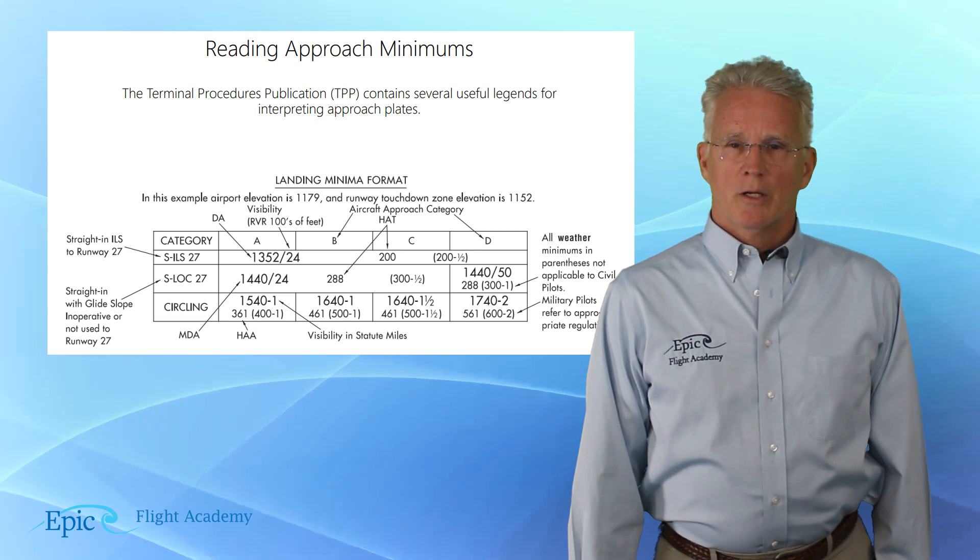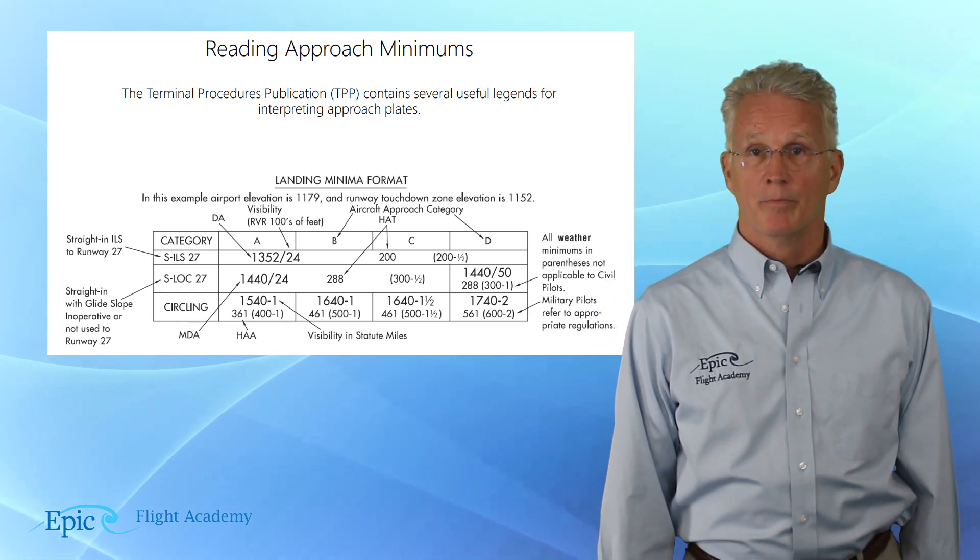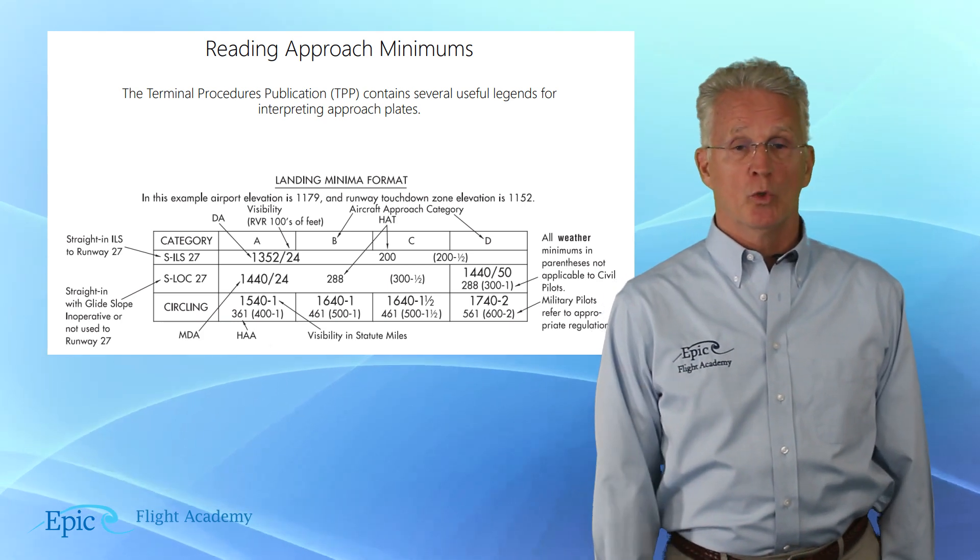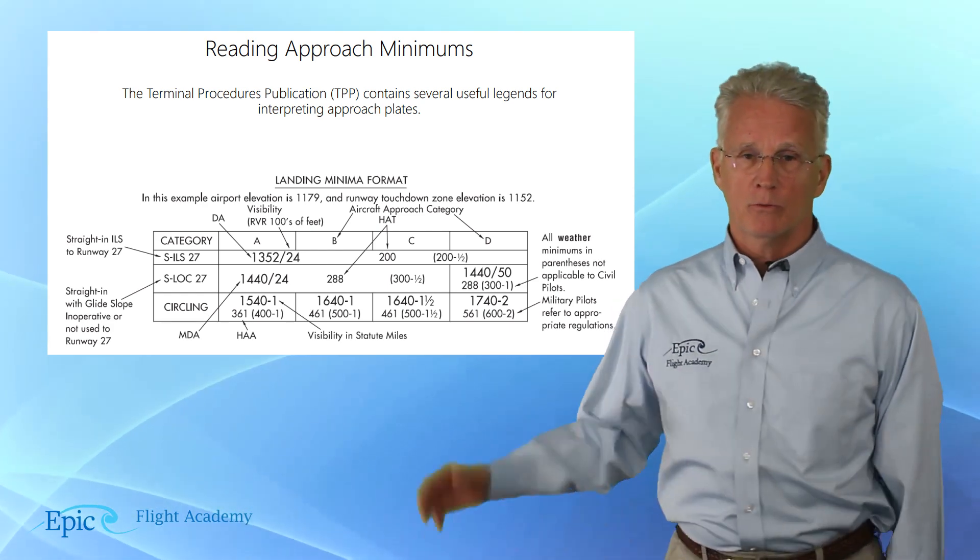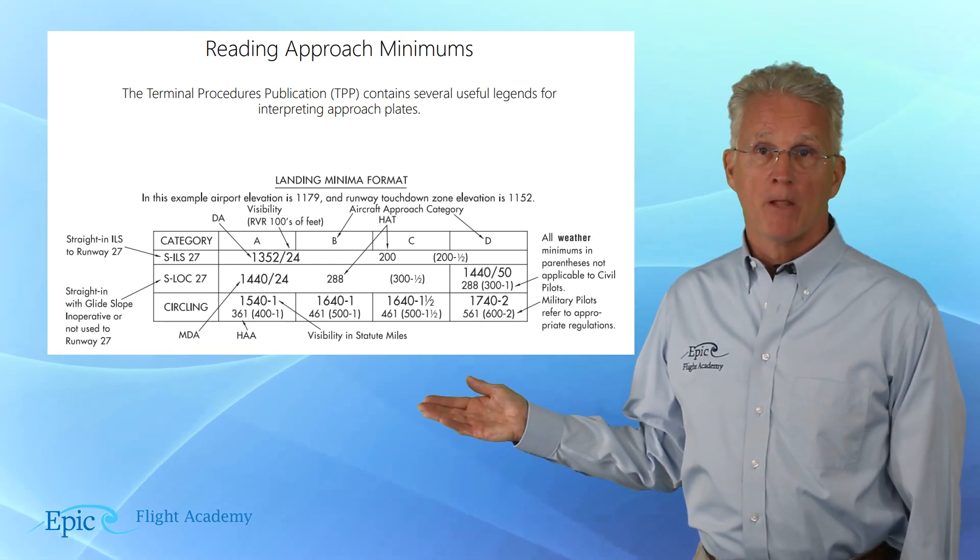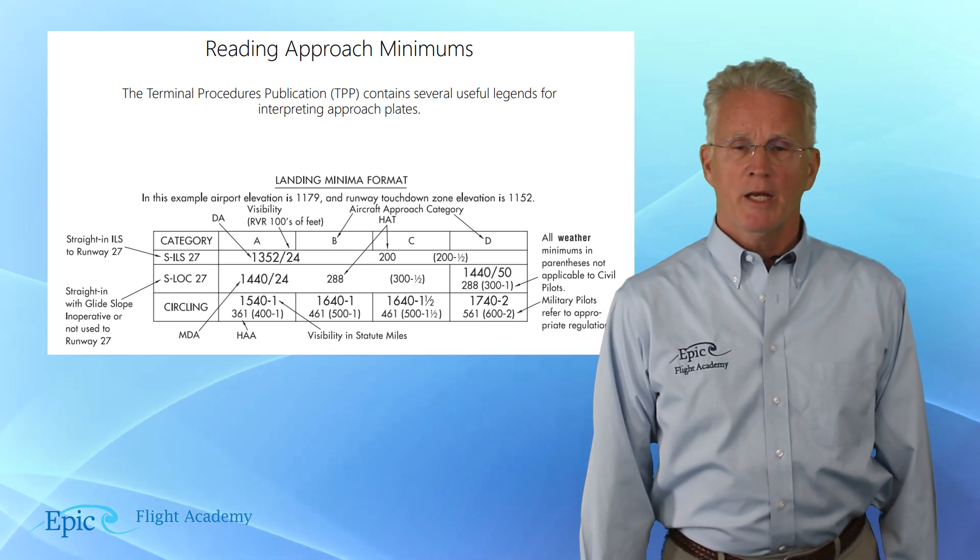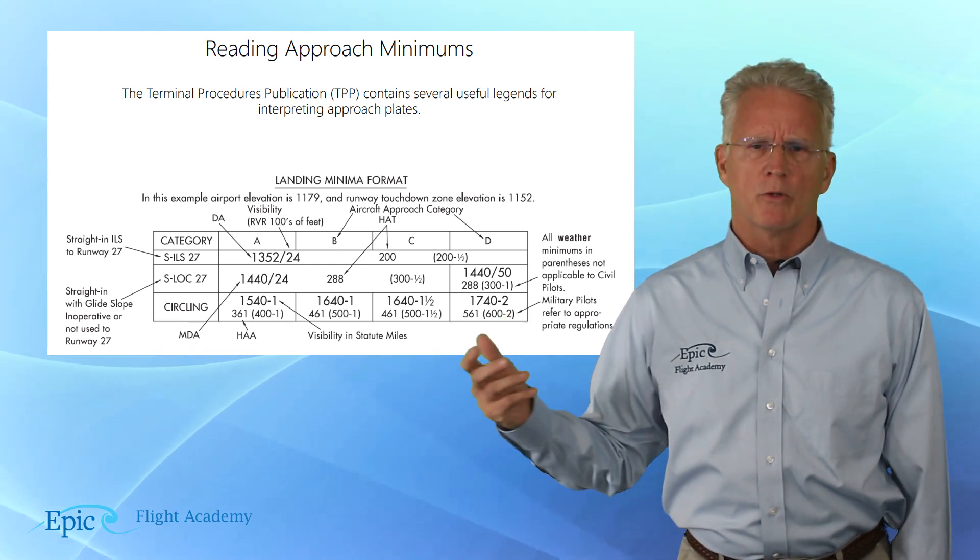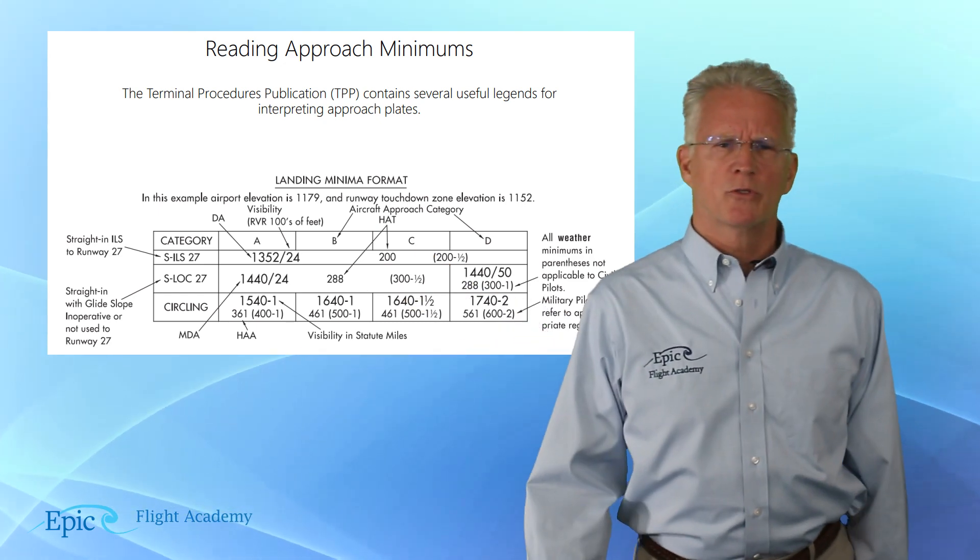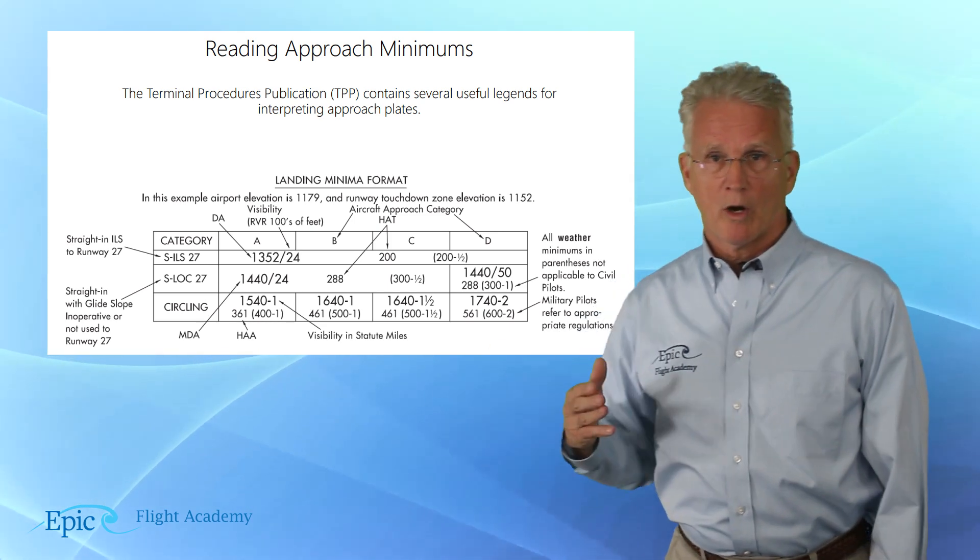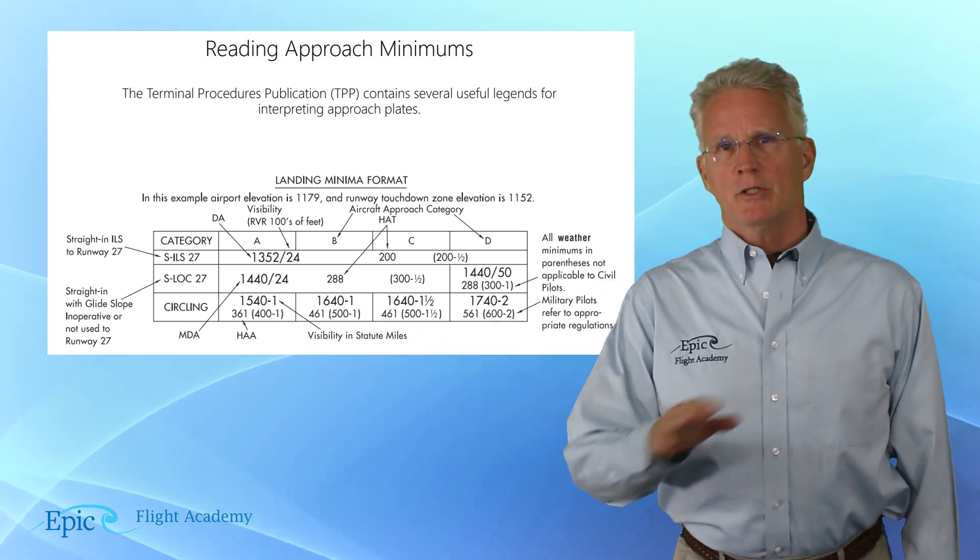Now, notice if, for example, I was operating my aircraft in category A and I knew that I was going to do the straight-in ILS 27, I can see my decision altitude would be 1,352 feet with a runway visual range minimum visibility of 2,400 feet. Now, what if I was going to fly in an aircraft in category B or C or D? Well, guess what? Same. What if I was doing the straight-in localizer 27? Those requirements are the same for categories A, B, and C, but if I was in category D, they change.